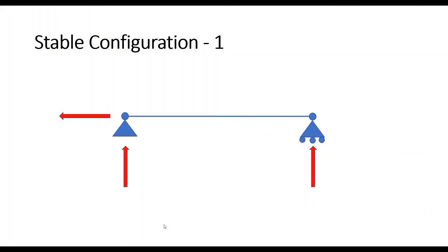What we see on the screen is the first stable configuration we discussed in the last session: a two-node single beam system. The left node is assigned a pin support, which restrains translational motion of the node in the plane, whereas the right node has a roller support allowing translational motion in the x direction but not in the y direction. Both nodes are allowed rotation. Let us now see how we can model this configuration in the STATPRO environment.